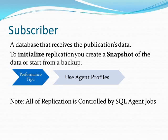The default agent profiles kind of work for a nice slow network — typical Microsoft 10-year-old methodology, kind of working for the lowest common denominator. If you tweak these up, it'll double the throughput of your data.